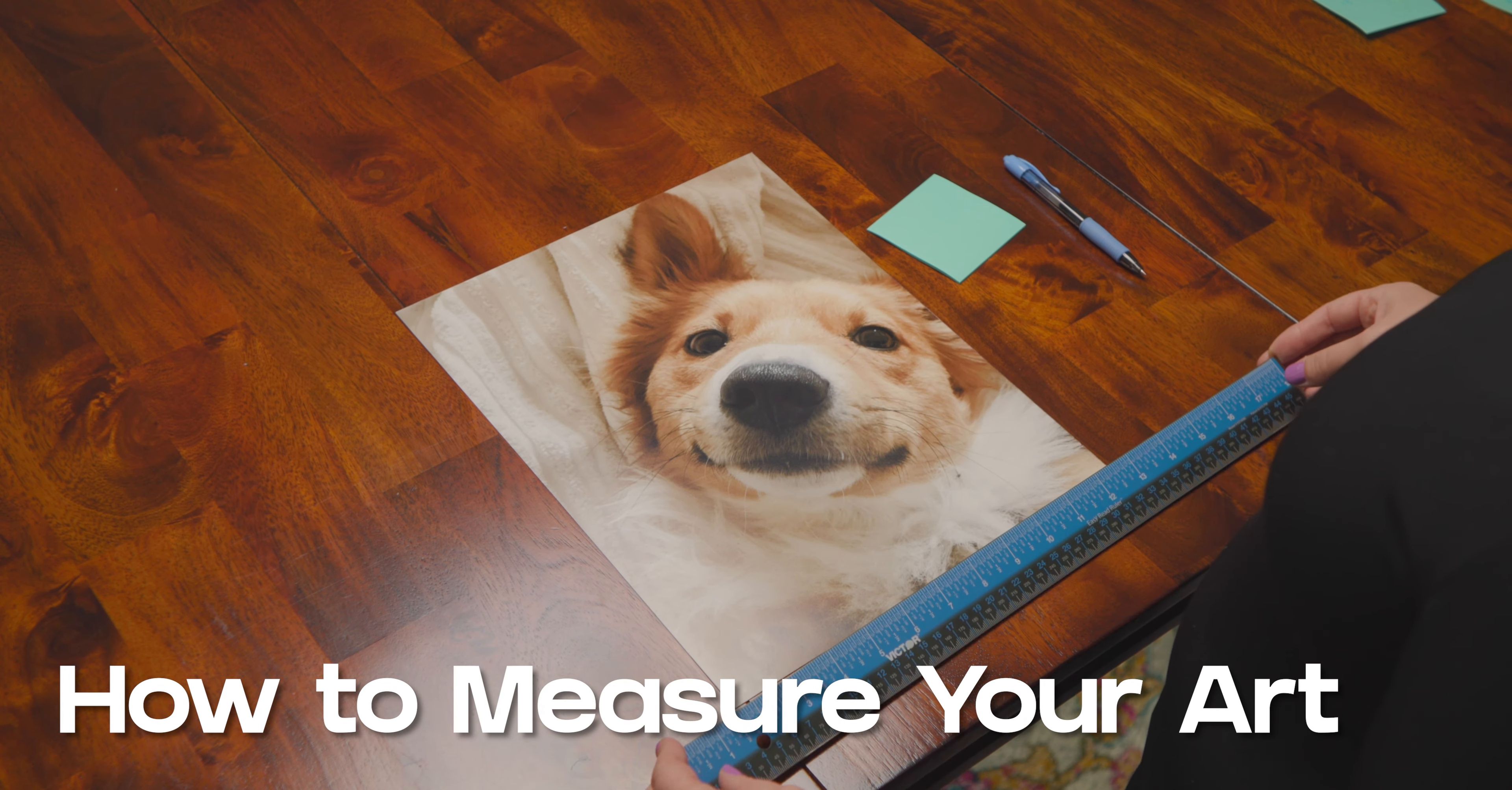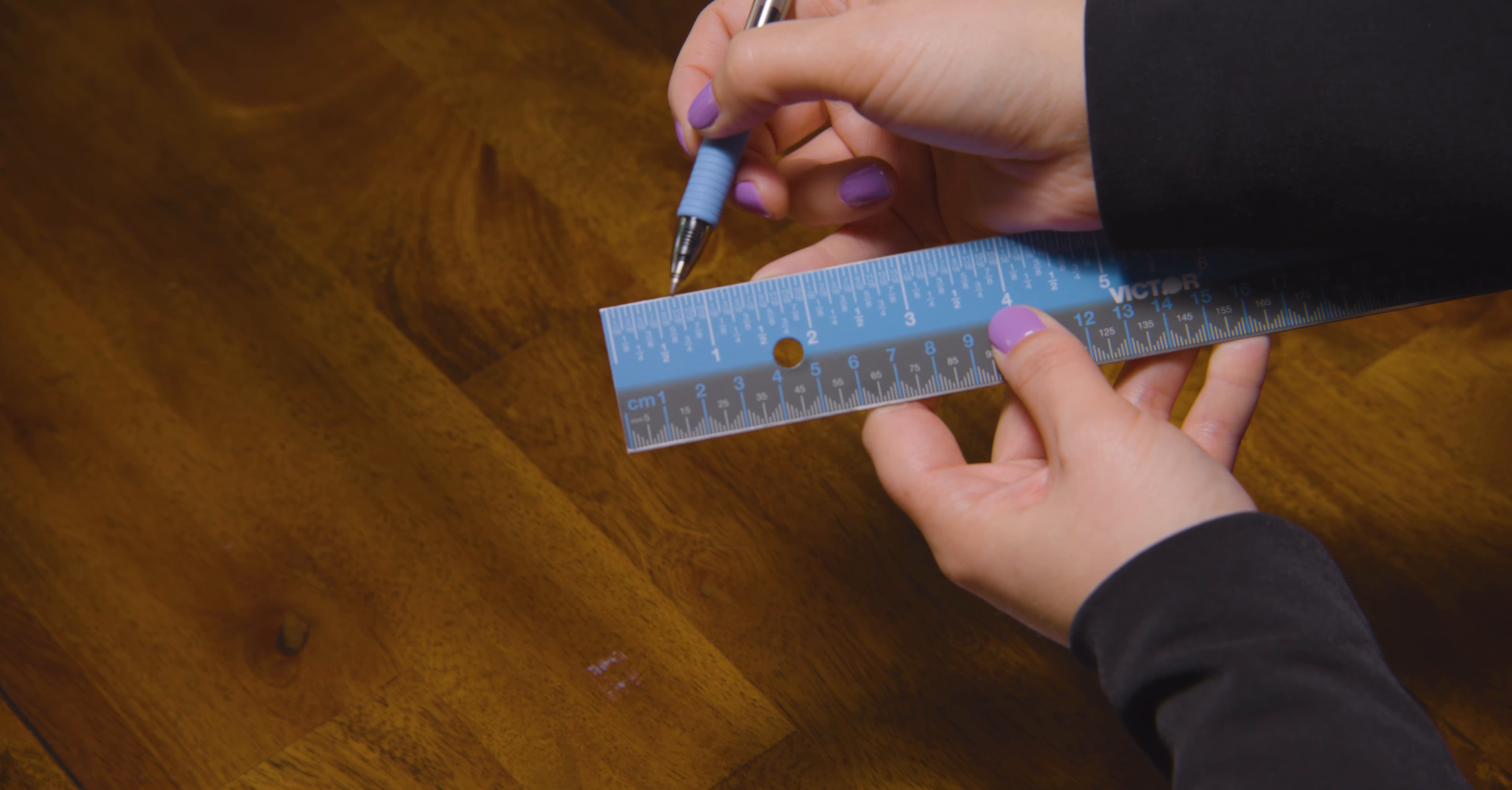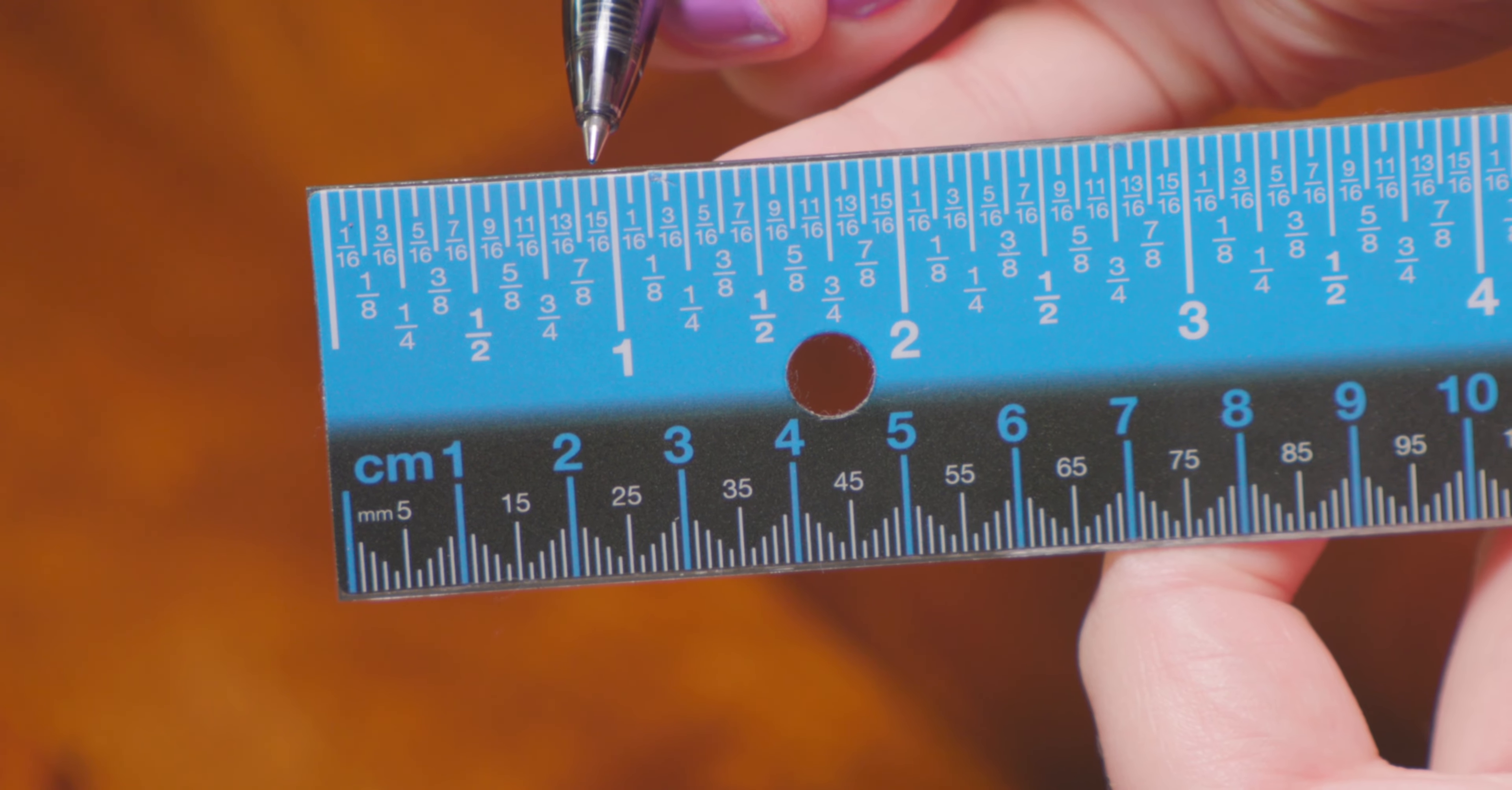How to measure your art: use a ruler or measuring tape that uses inches, the more rigid the better, to ensure the most accurate edge-to-edge reading. For the most precise reading, we recommend using a ruler that has 15 lines between each inch.